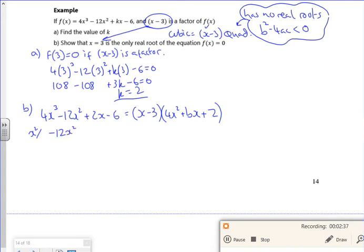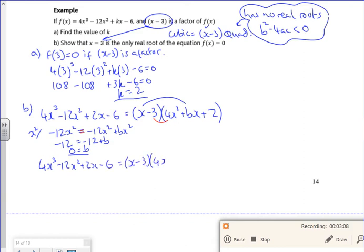So minus 12x squared, comes from minus 12x squared there, plus bx squared. So I'm saying that minus 12 is minus 12 plus b. So b is 0. So I'm saying that my 4x cubed minus 12x squared, plus 2x minus 6, is x minus 3 times by 4x squared plus 2, because b is 0.